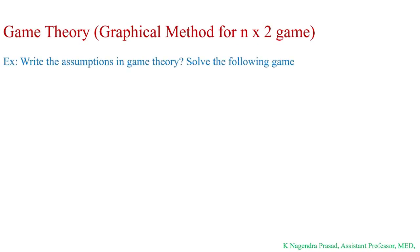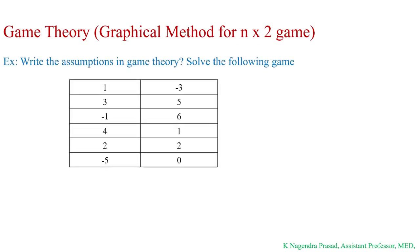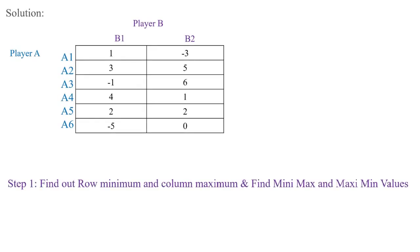Hello everyone, today I am going to discuss the game theory problem for an n×2 game using the graphical method. This method will be explained with one example problem. Observe that player A has six strategies and player B has only two strategies. This type of game is called an n×2 game, which means player A has more than two strategies and player B has two strategies.